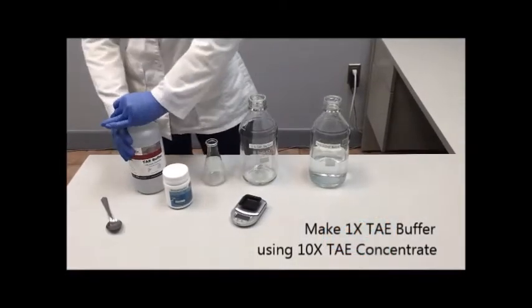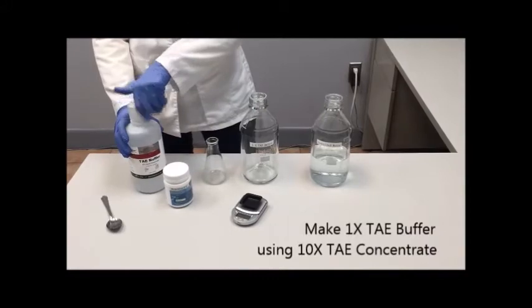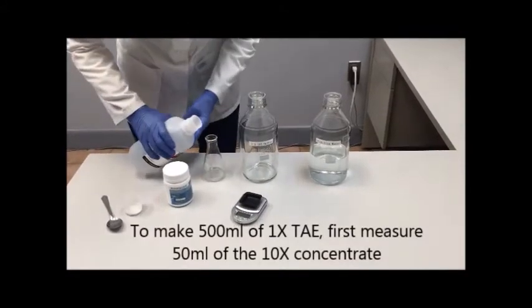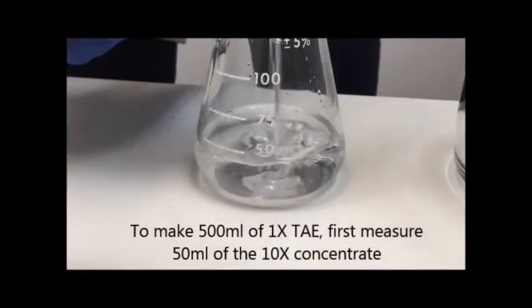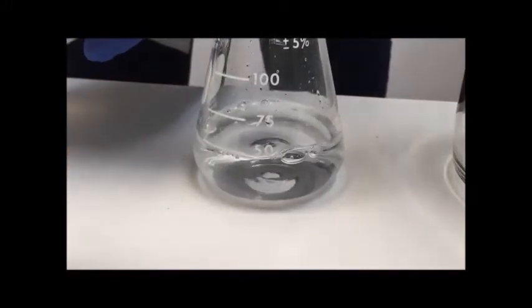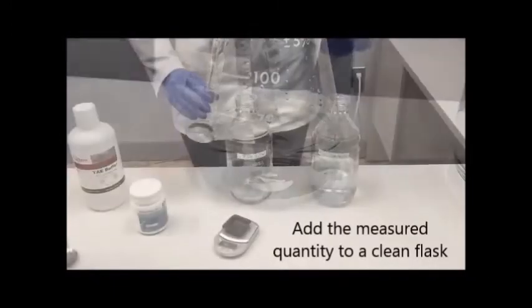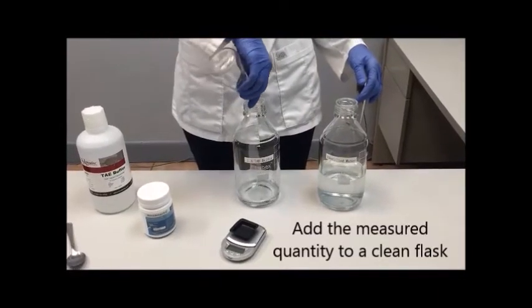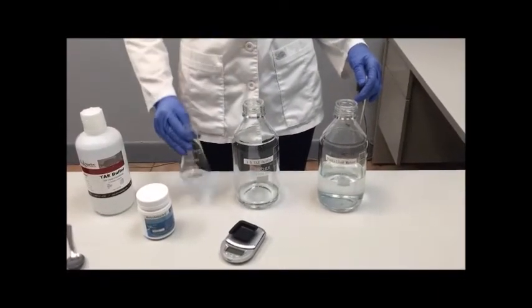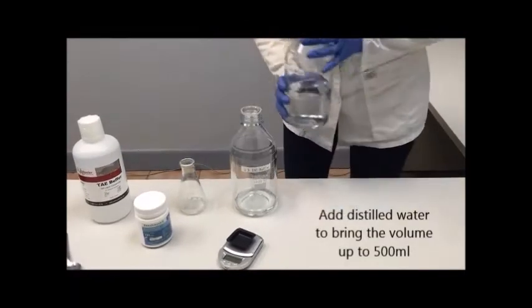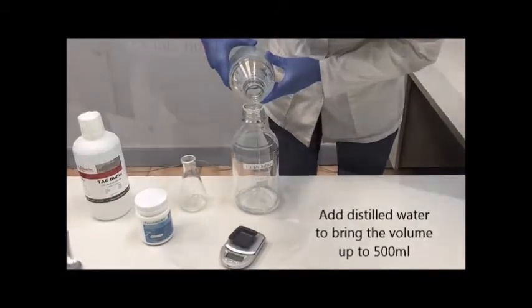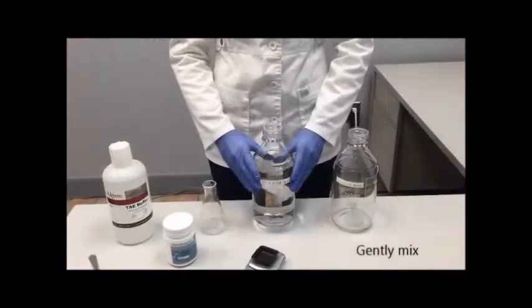Our first step is to make 1x TAE buffer using our 10x TAE concentrate. To make 500 ml of 1x TAE, first we're going to measure 50 ml of the 10x concentrate. We'll add this measured quantity to a clean flask, and then we're going to bring the volume up to 500 ml using distilled water. Then gently mix the solution.